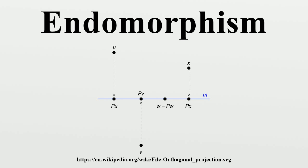Automorphisms: An invertible endomorphism of X is called an automorphism. The set of all automorphisms is a subset of End with a group structure, called the automorphism group of X and denoted Aut. In the following diagram, the arrows denote implication.